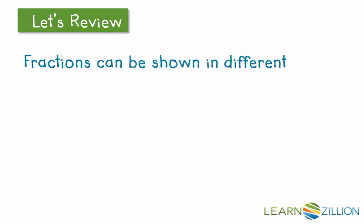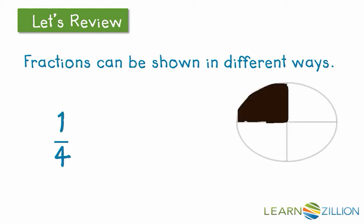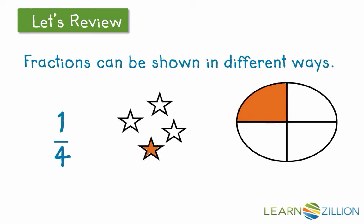You know that fractions can be shown in different ways. For instance, we have the fraction 1 fourth, and this is what it would look like in an area model. One part out of four is shaded in. This is what it would look like represented as a set, and you also know that 1 fourth can be shown as a value on a number line.